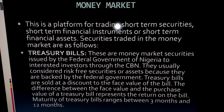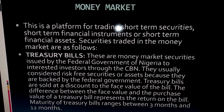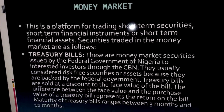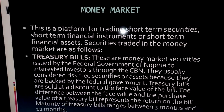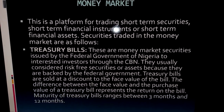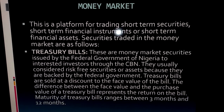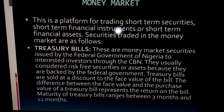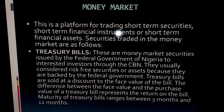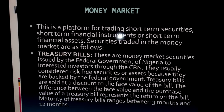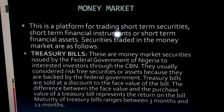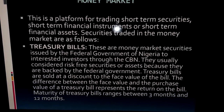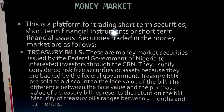The money market is where short-term securities are traded — securities that can be converted to cash within a short period of time. An example is the treasury bill, a security issued by the federal government through the Central Bank of Nigeria. The government uses treasury bills to raise money from the public, with maturities between three and twelve months. Treasury bills are considered very safe because the federal government backs them.